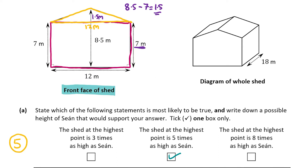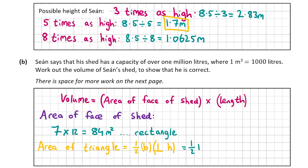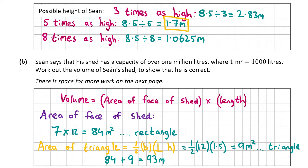Plugging into the formula: half of 12 by 1.5 gives us 9 meters squared for the triangle. So the total area of the front face is 84 meters squared for the rectangle plus 9 meters squared for the triangle, giving a total of 93 meters squared.